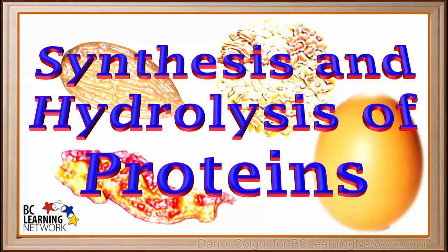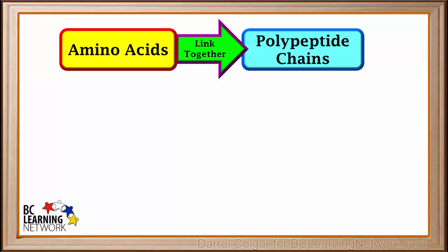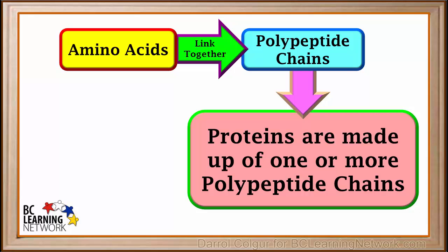Our body is close to 20% protein and many of the foods we eat also contain protein. Amino acids are the building blocks of proteins. Amino acids link together to form polypeptide chains, and proteins are typically very large molecules made up of one or more polypeptide chains.